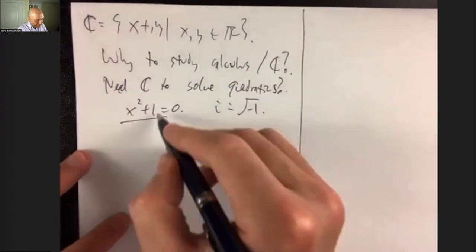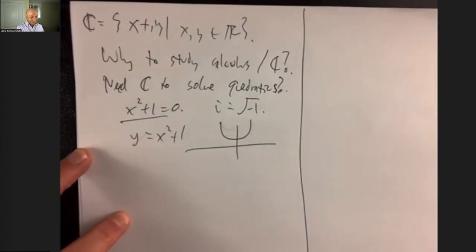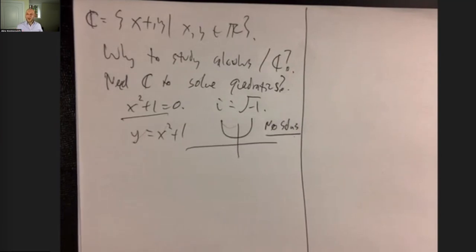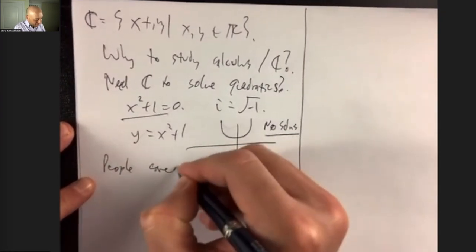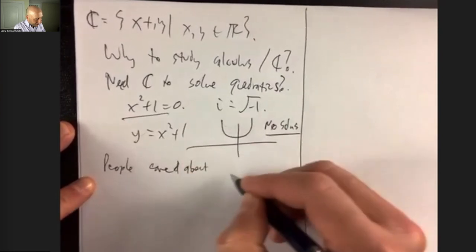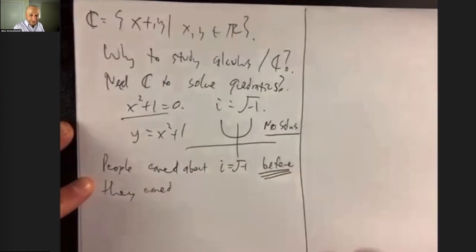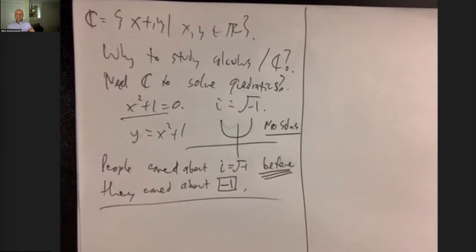You're looking at y equals x squared plus one and trying to figure out where it crosses the x-axis — but of course it never crosses. There are no solutions, and there's no problem. You don't need i to solve quadratic equations, because if there are no solutions, that's it. You do need i, exactly as Ishan said, to solve cubic equations. In fact, people historically cared about i — the square root of negative one — before they believed in negative numbers themselves. They had complex numbers before they had negative numbers. Think about that.